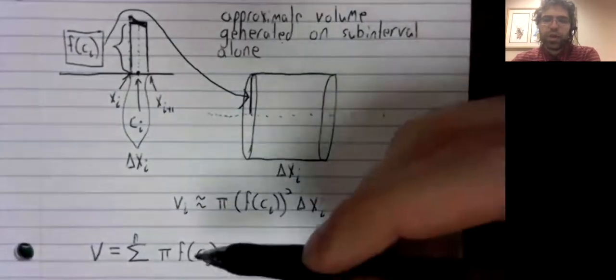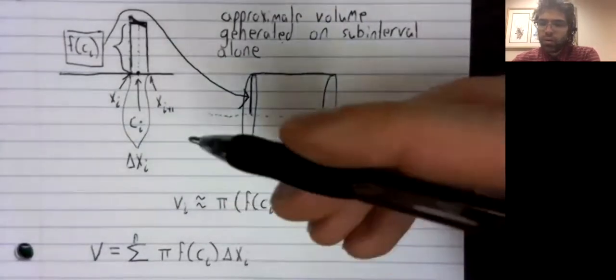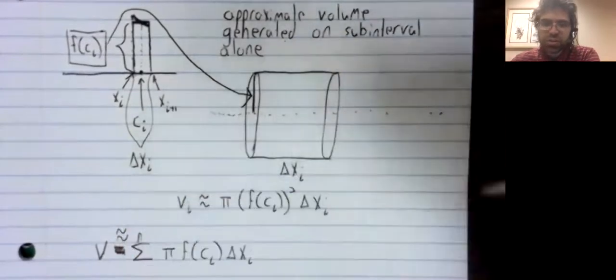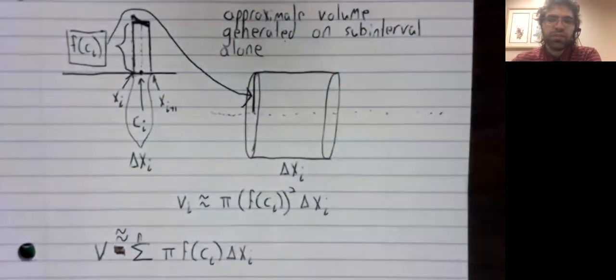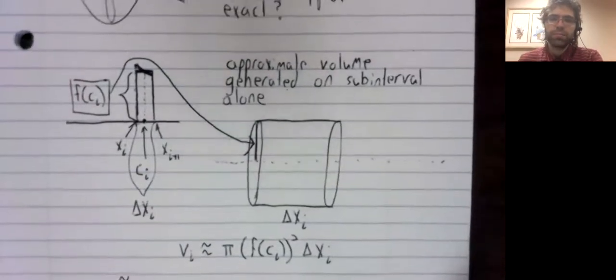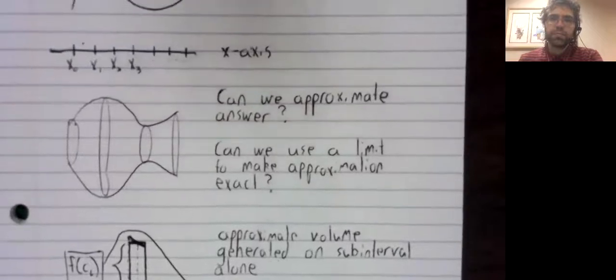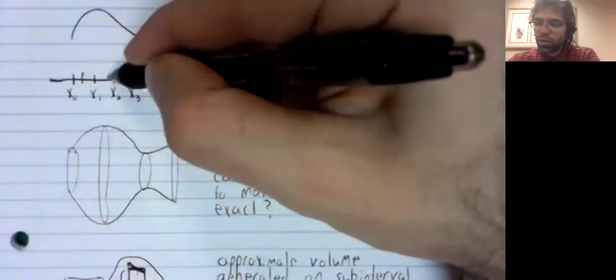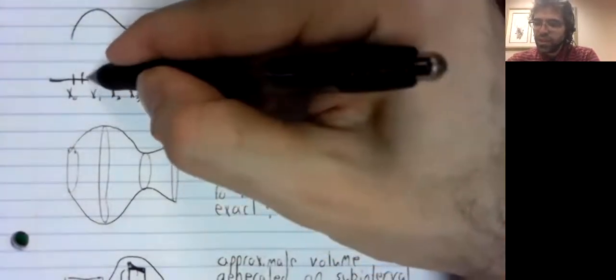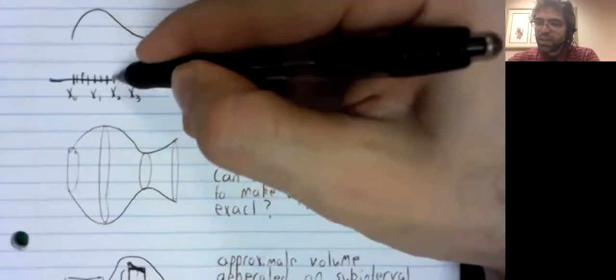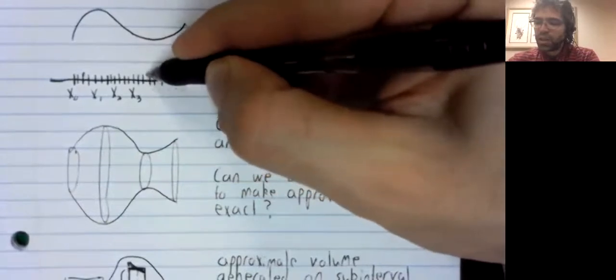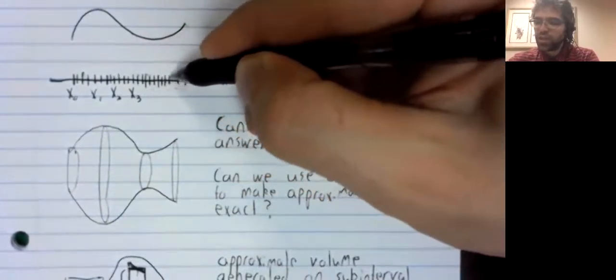And this approximation of the volume is a Riemann sum. And this approximation of the volume, I should emphasize, it is just an approximation. But this approximation of the volume gets better the smaller these intervals get.